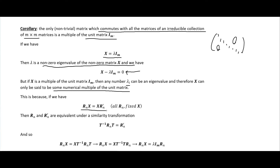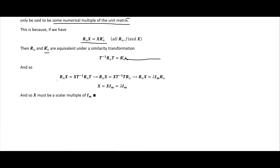If X is a multiple of the unit matrix I_M, then any scalar lambda times I can be an eigenvalue, and therefore X can only be said to be some numerical multiple of the unit matrix. This is because if R_n and R'_n are equivalent under a similarity transformation, we get R_n X = X times lambda I, showing that X multiplied with the identity equals a scalar multiple of the identity. So X must be a scalar multiple of the identity matrix.